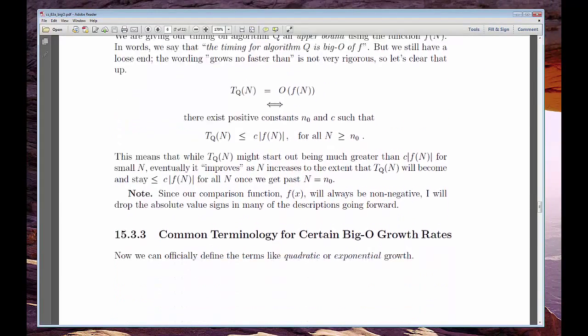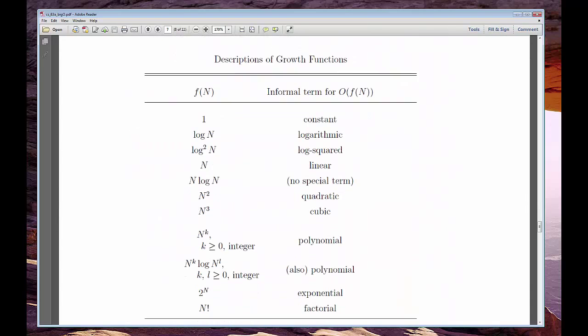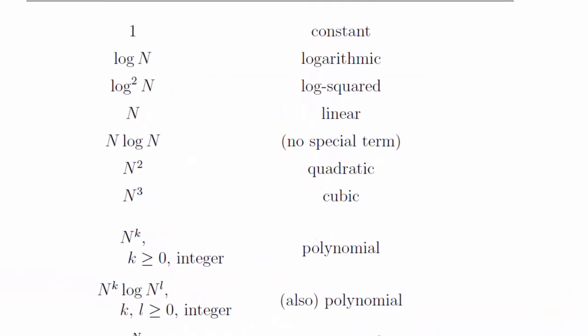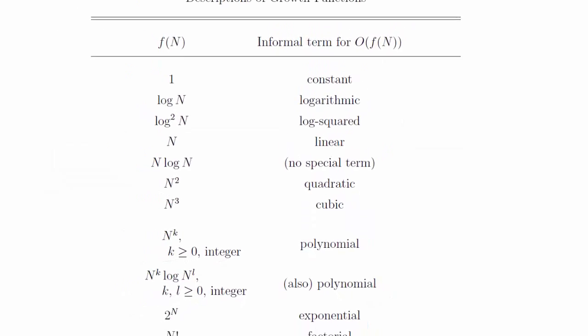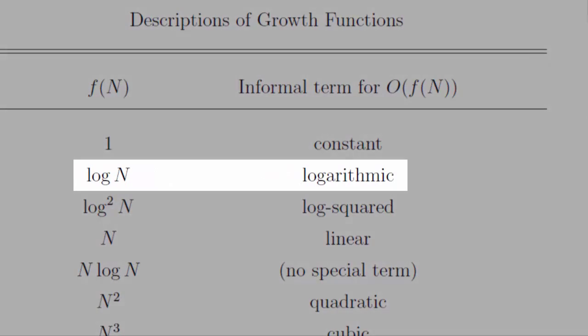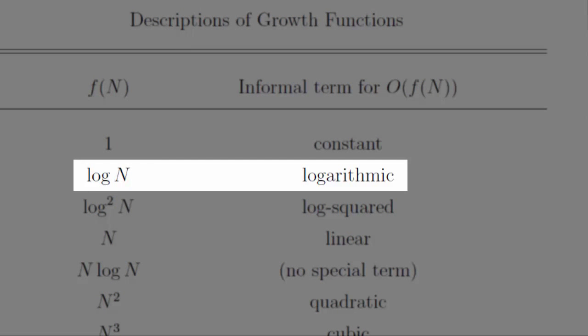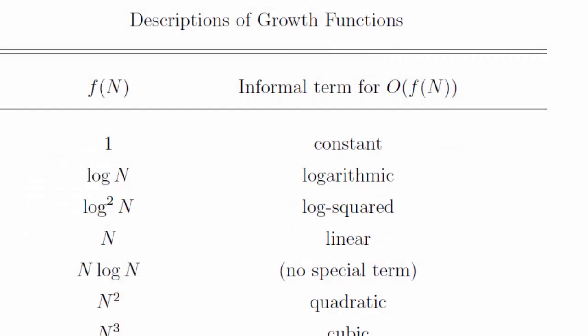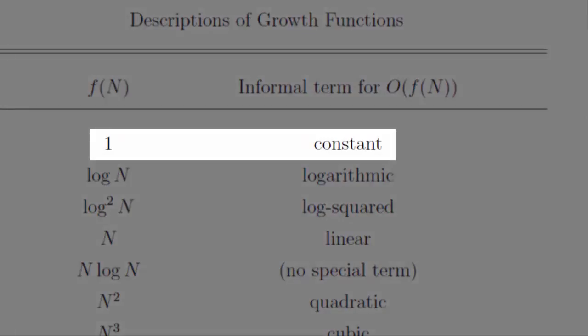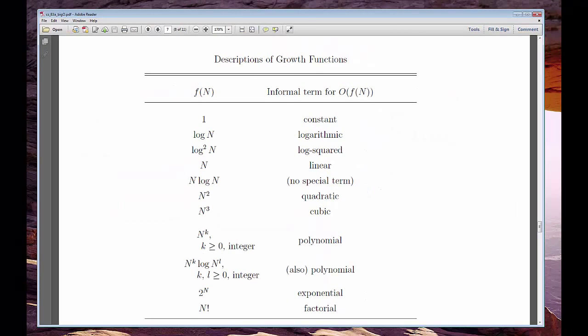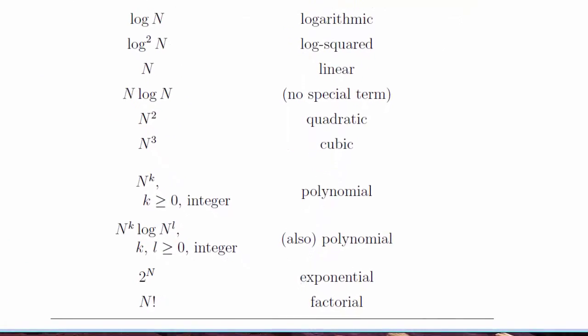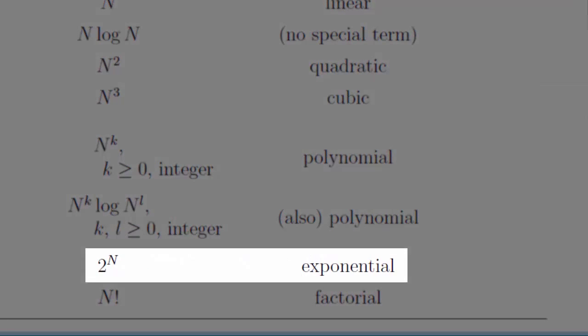If our algorithm is Big O of f of n equals n squared, then our algorithm is said to be quadratic. That's not too bad. If it's Big O of log n, our algorithm is logarithmic. That's really good. If it's Big O of 1, our algorithm is constant. That's the best. In that case, our function doesn't care how big n is. It always takes the same amount of time. At the other end of the spectrum, if it's Big O of 2 to the n, that's really bad. It's called exponential.